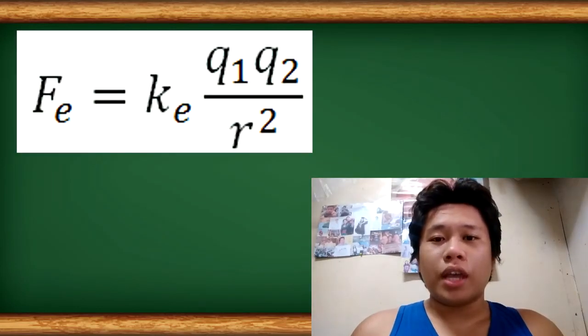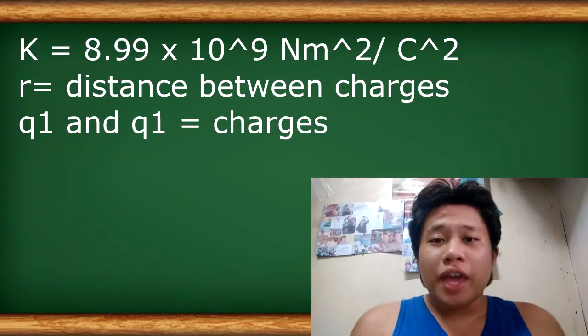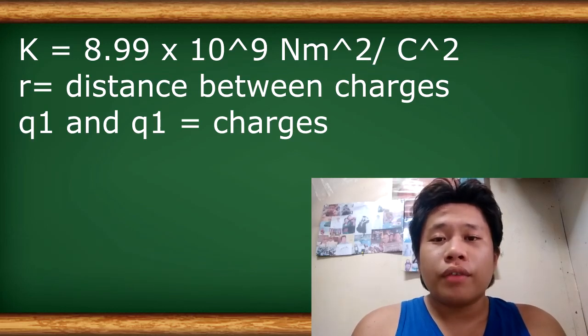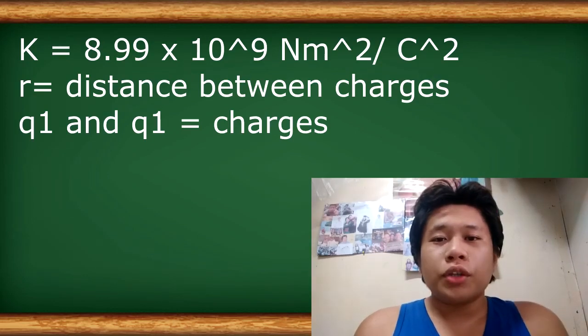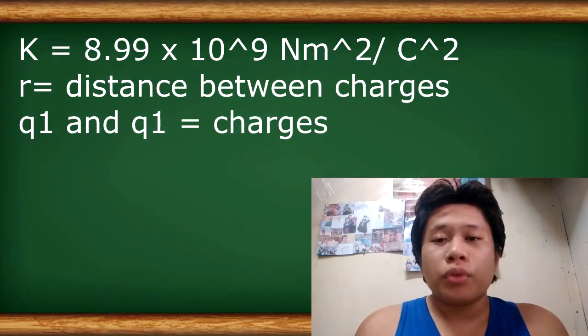He measured the force between two-point charges and came up with a theory that the force is inversely proportional to the square of the distance between the charges. In solving this, the formula used is F equals K times Q1 times Q2 over R squared, where K is the proportionality constant equal to 1 over 4π times the permittivity of a vacuum, which equals 8.99 times 10 to the power of 9 newton meter squared over C squared. Q1 and Q2 are the two point charges and R is the distance between both charges.